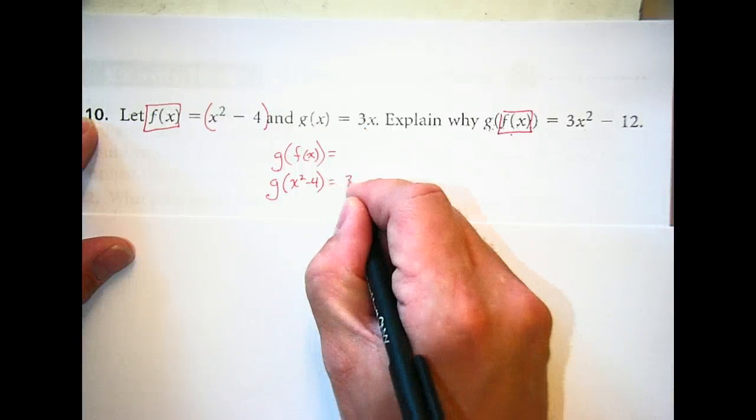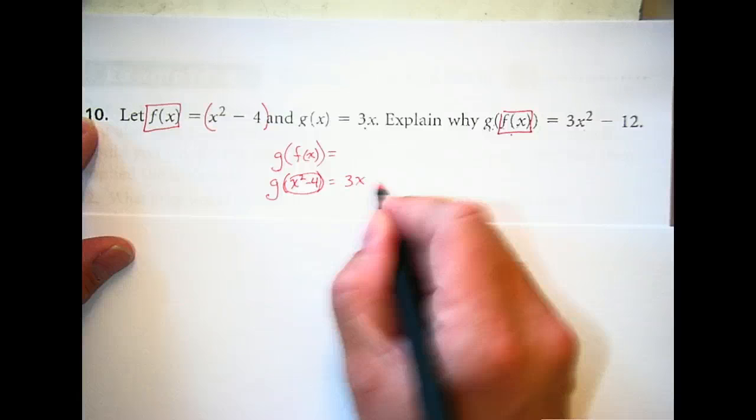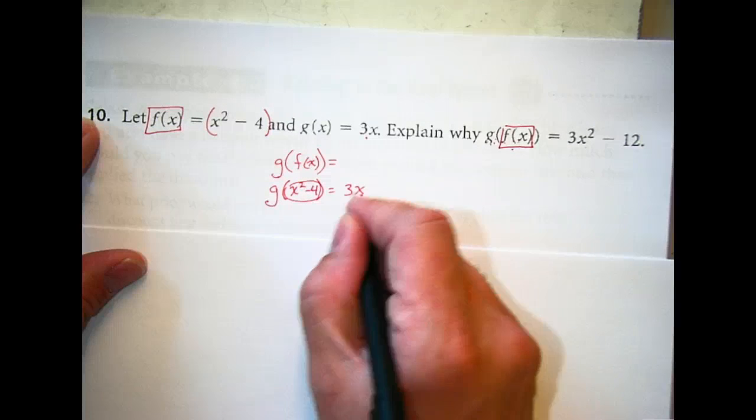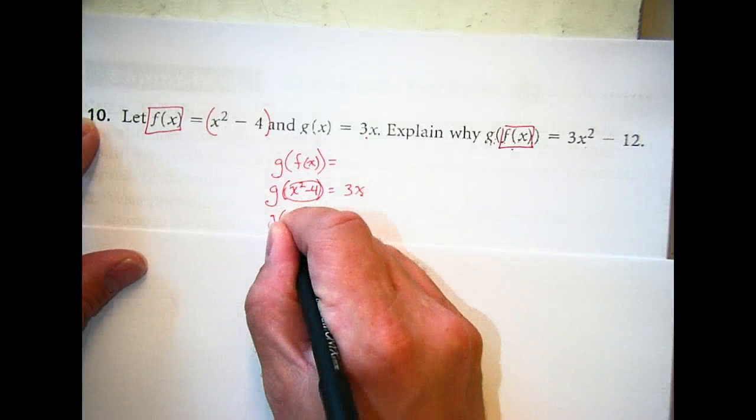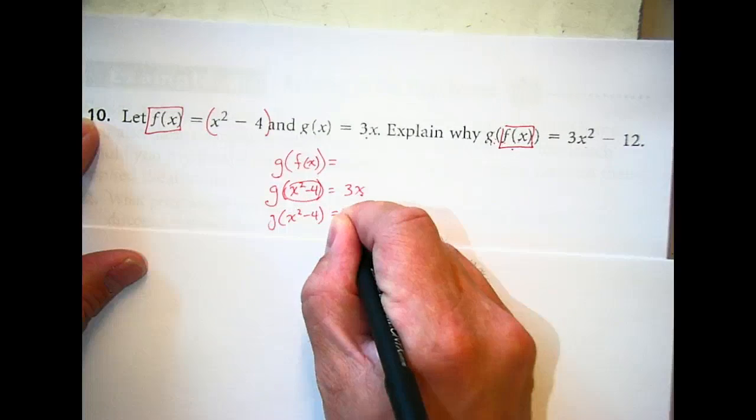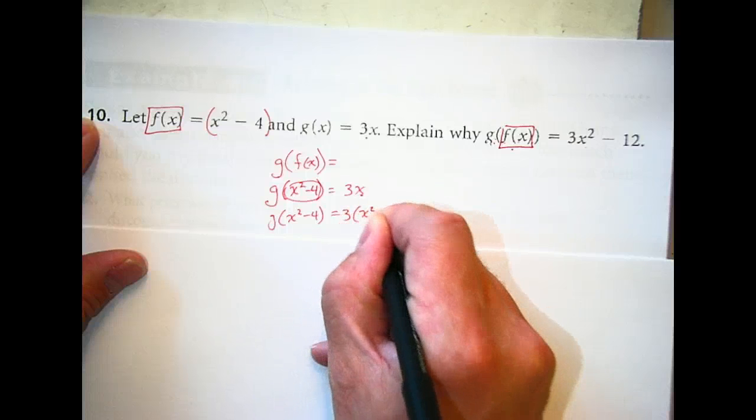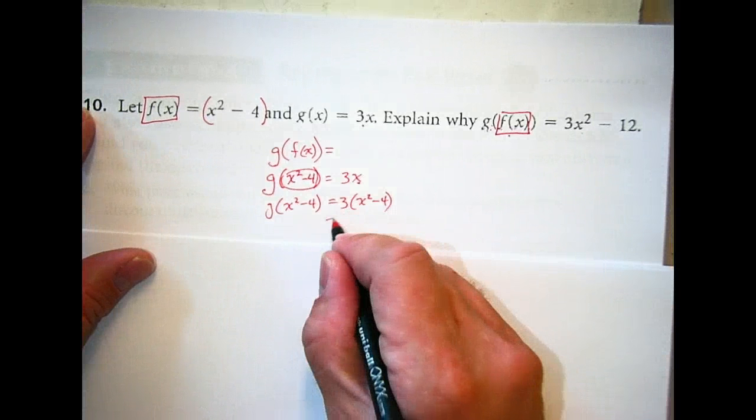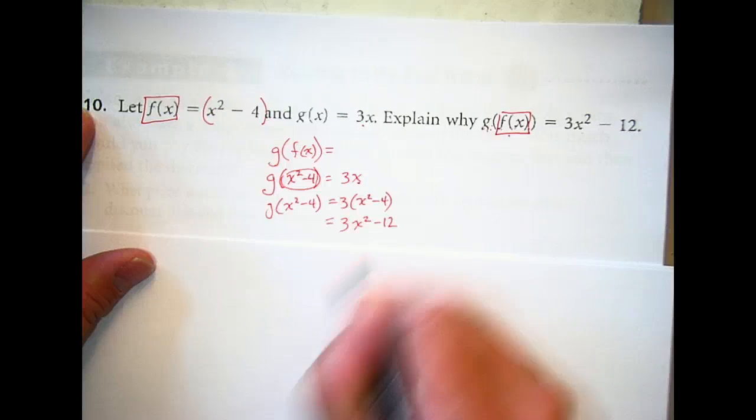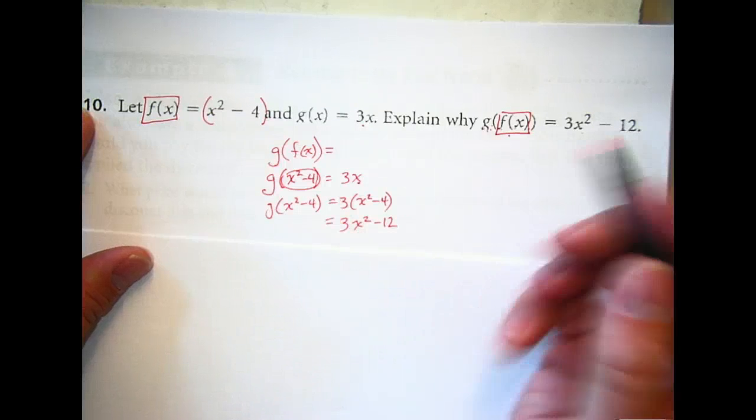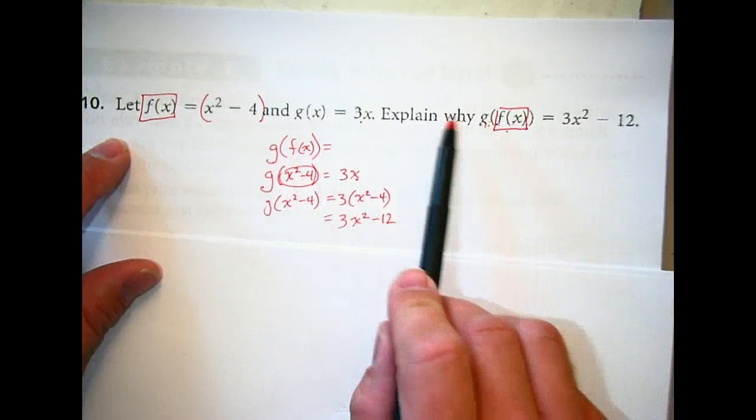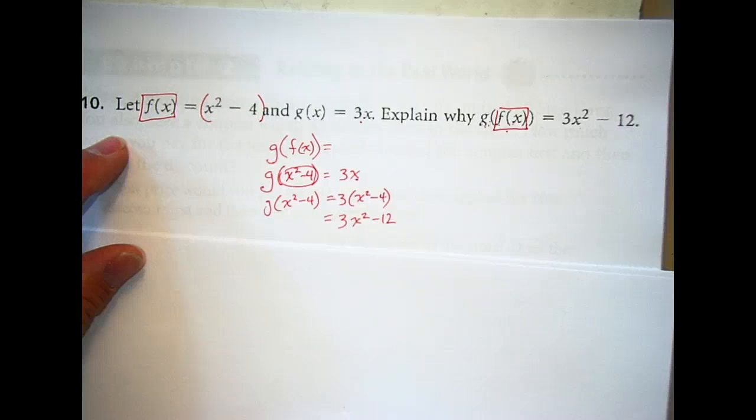You can change that f(x) to x² - 4. We could actually say g(f(x)), we could change that to become g of, rather than f(x), let's call it x² - 4. You guys with me on that? So g(x), our g(x) equation is 3x. If I put 3x down here and I put this thing in for my x, which is what we've been doing, that means I actually have, rather than x here, I have g(x² - 4) = 3 times (x² - 4).